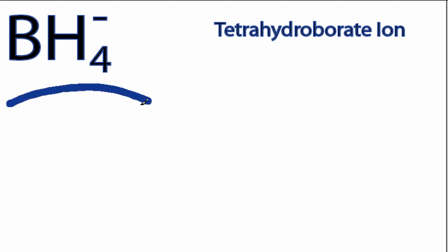This is the BH4 minus Lewis structure. For BH4 minus, we have 3 electrons for boron,